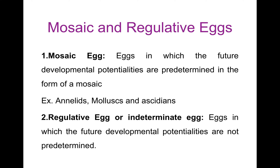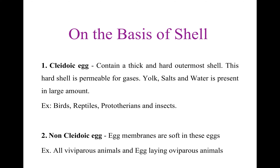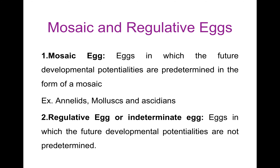Now, Regulative or Indeterminate Eggs. In vertebrates and most of the invertebrates, the developmental potentialities are not predetermined in the eggs. The removal of a small portion of the egg or even one or two early blastomeres will not affect the normal development. This type of eggs in which future developmental potentialities are not predetermined are called Regulative or Indeterminate Eggs. This type of eggs are found in vertebrates and most of the invertebrates.